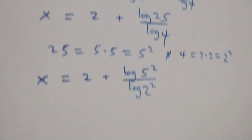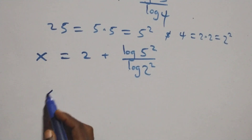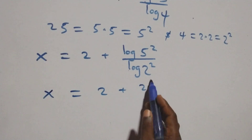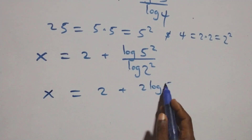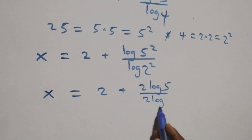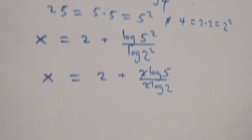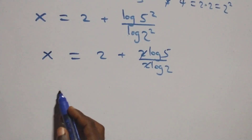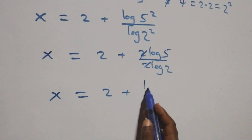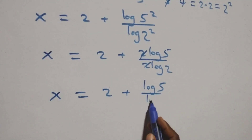Here we apply the power of logarithm: the 2 comes out in front of both numerator and denominator. This becomes x equals 2 plus 2 log 5 over 2 log 2. The 2s cancel with each other, and this becomes x equals 2 plus log 5 over log 2.